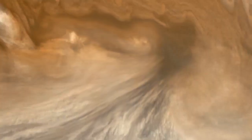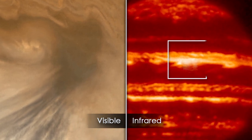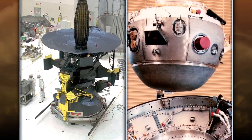Hotspots are like holes in the clouds because they appear very dark when observed in visible light, but in infrared light they appear very bright. This indicates that we're seeing deeper down into warmer layers of the atmosphere.